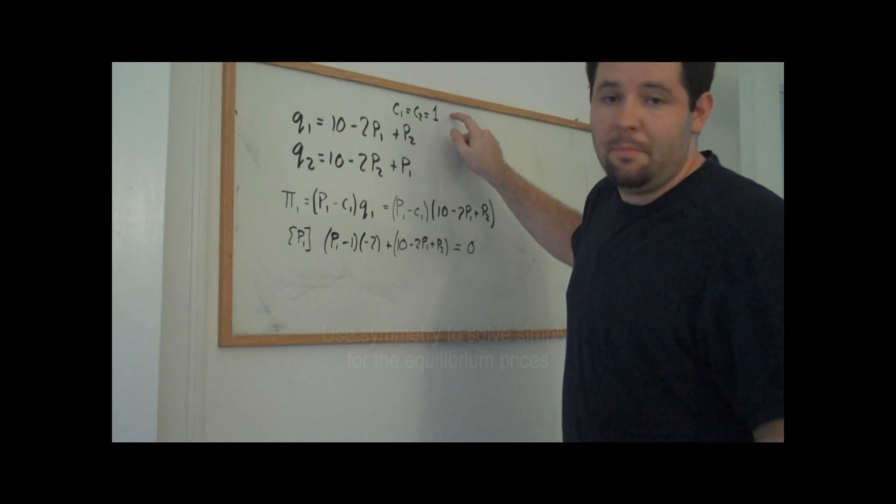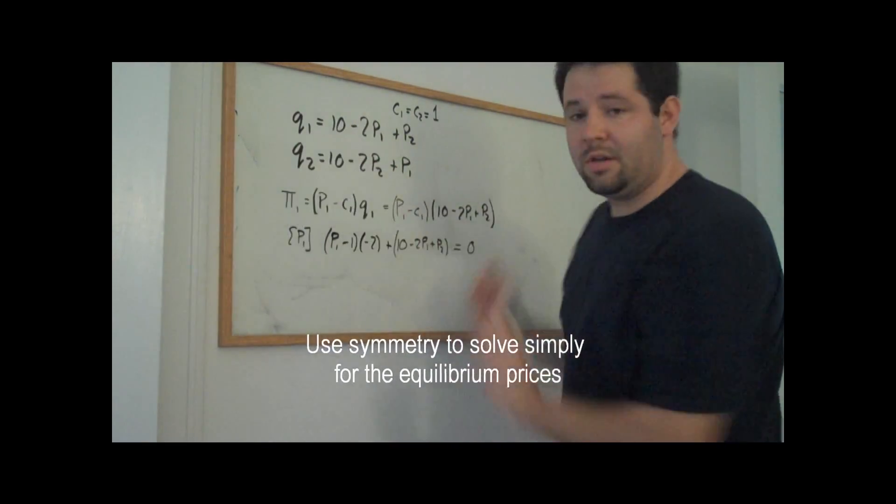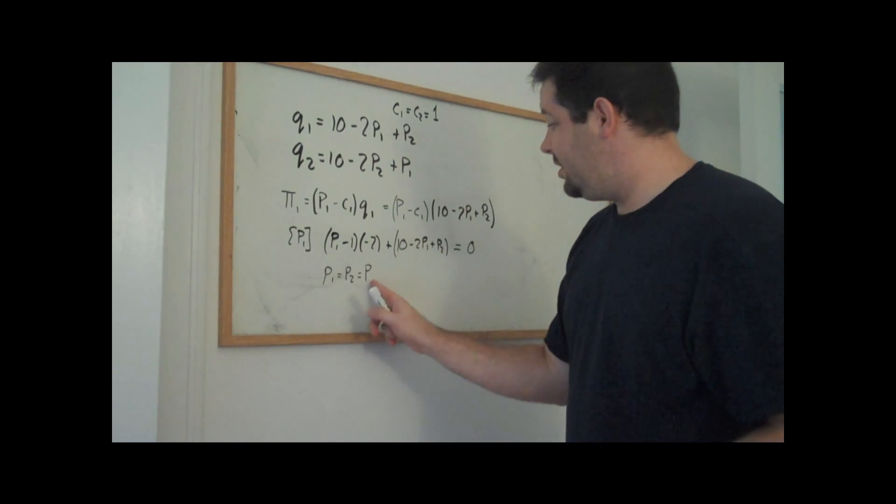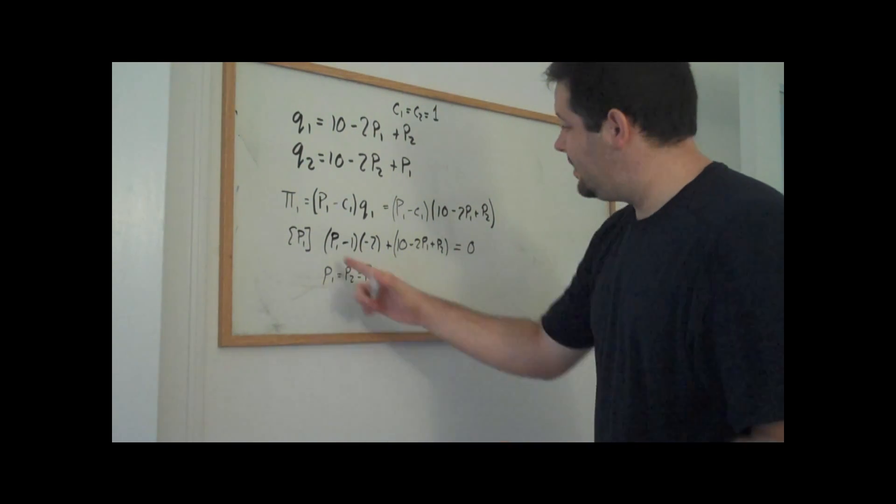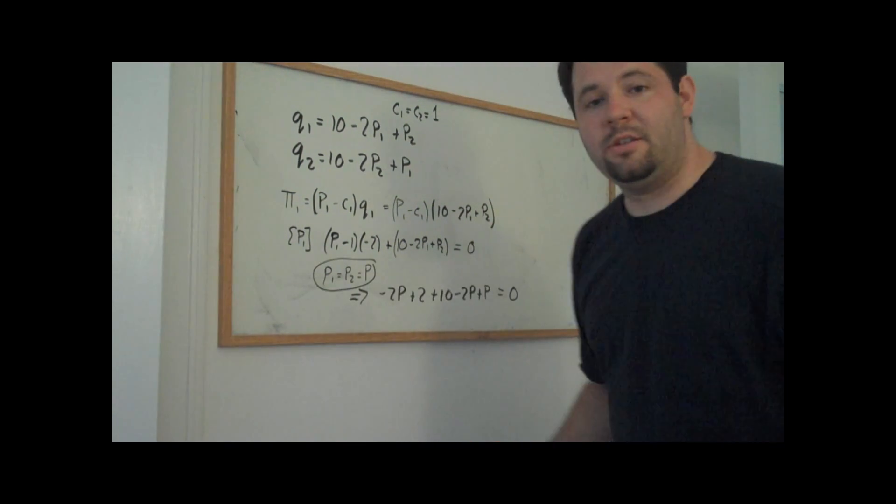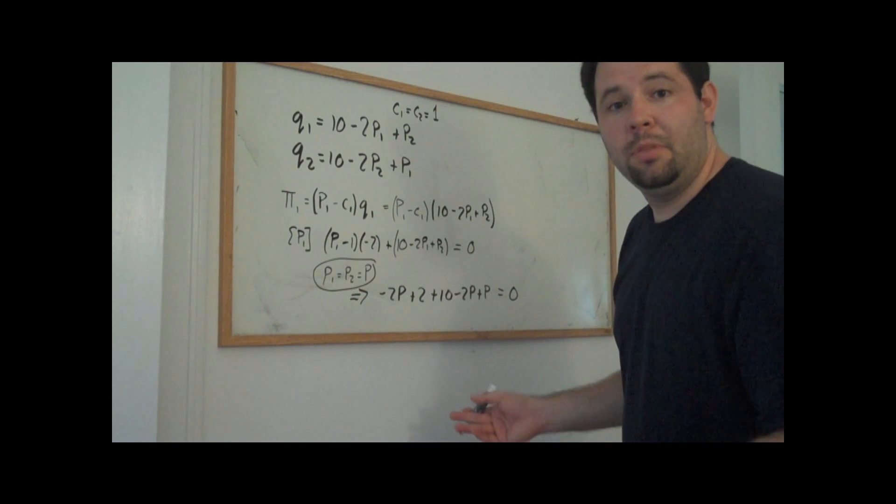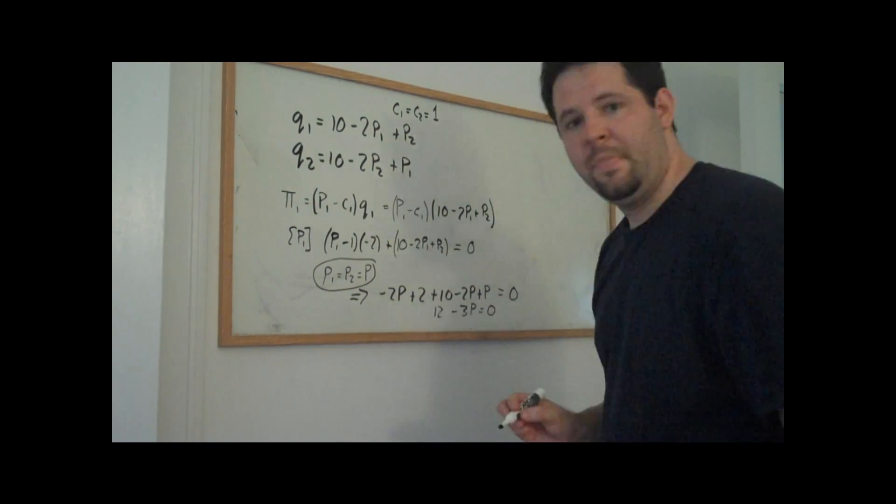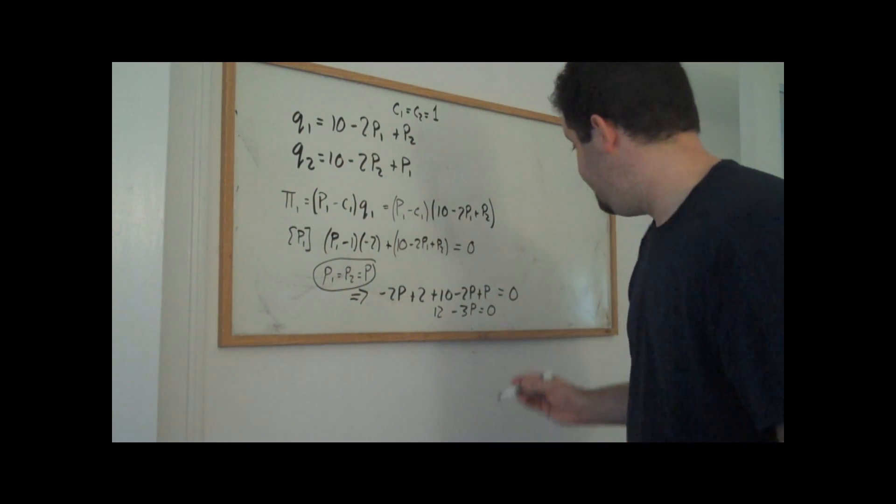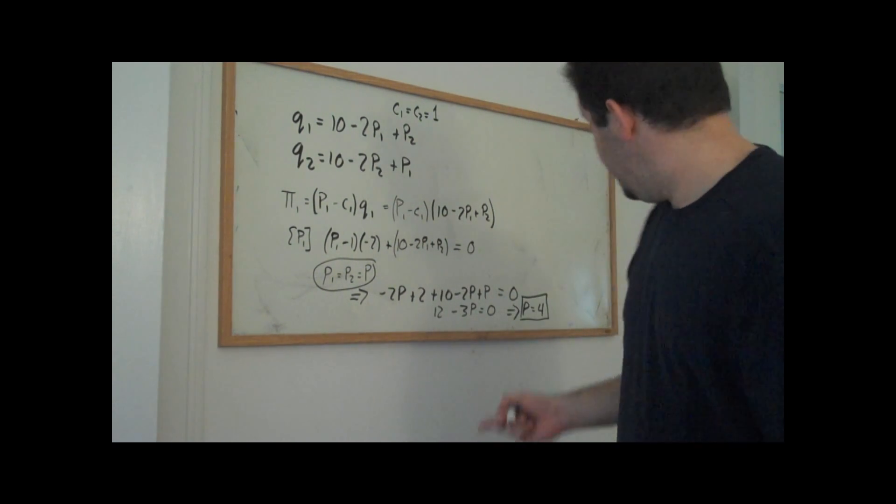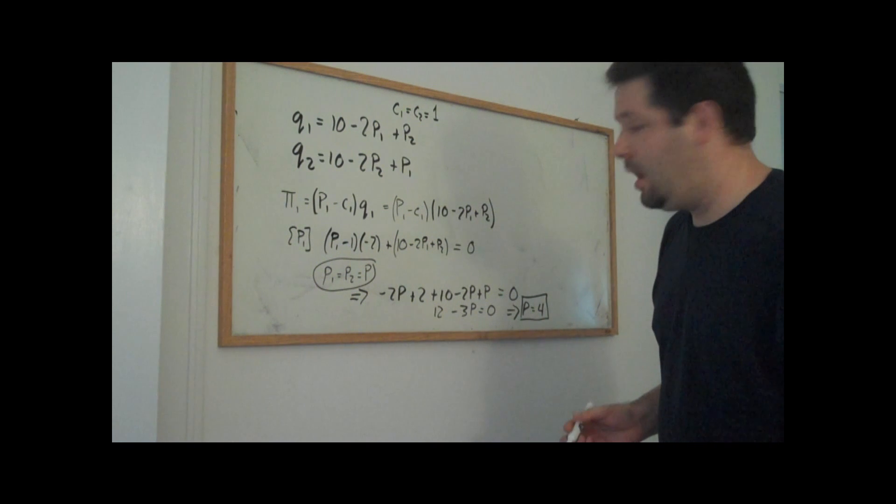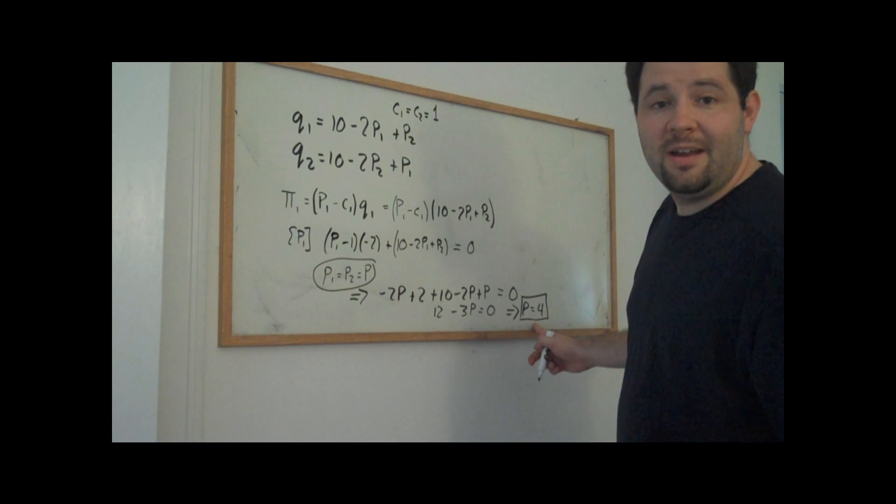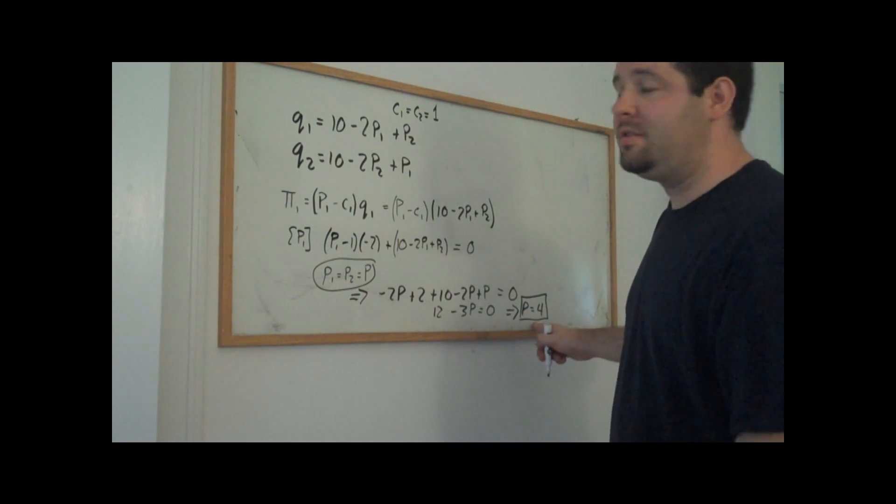Given that they're facing the same marginal cost and their demand curves are symmetric, they're going to end up setting the same price. We can just plug in P for every instance of P1 or P2. I just used the distributive rule and then plugged in P for every instance of P1 or P2. Now let's go ahead and group terms. And now we can solve for P. And so we get a price of four dollars per unit. And what we'll see is that this is the price for P1 and P2. And we can plug in and find out what quantities that each of these firms sell.